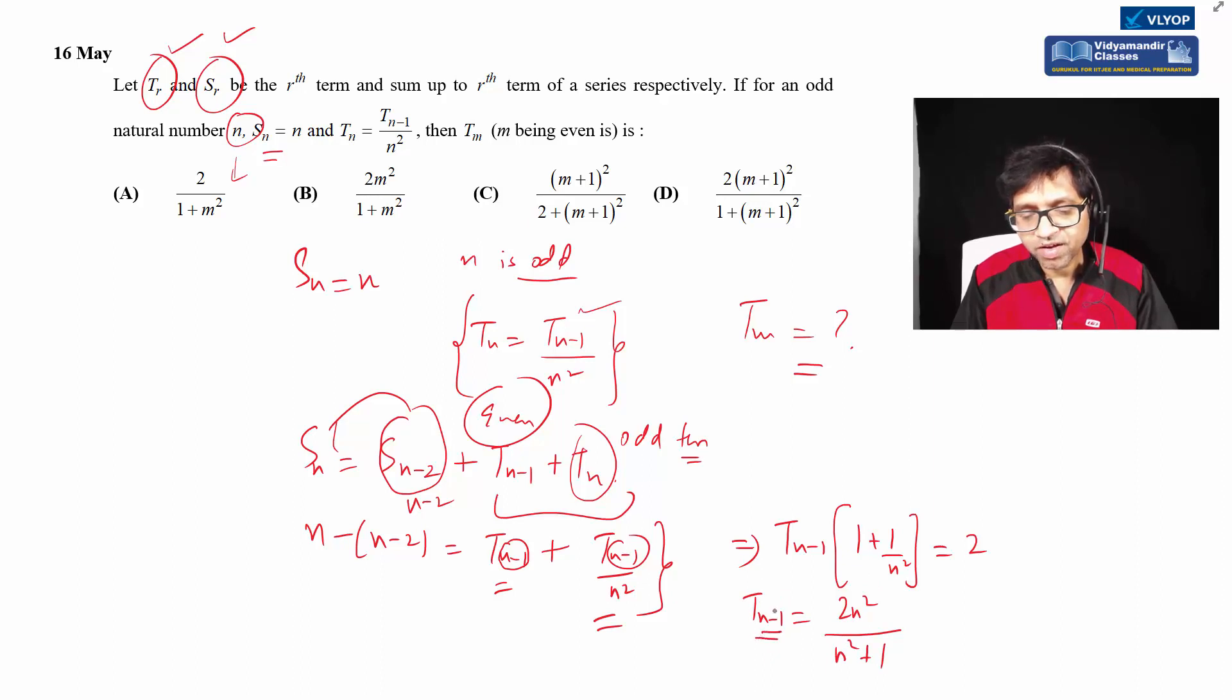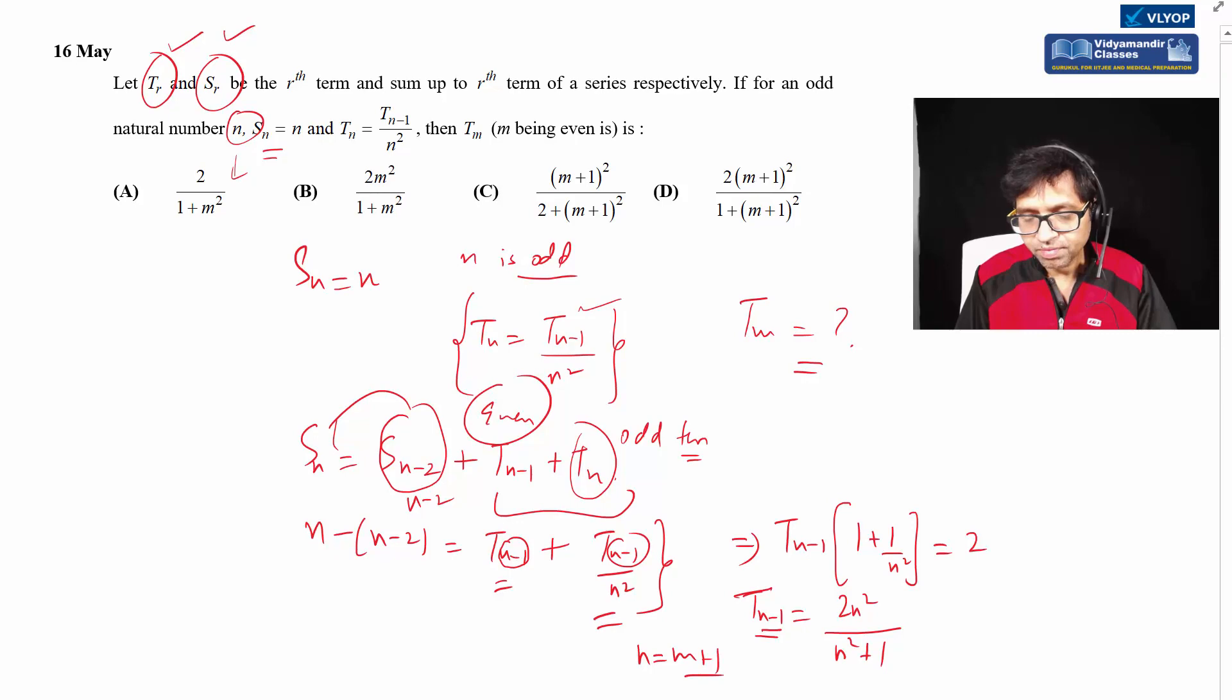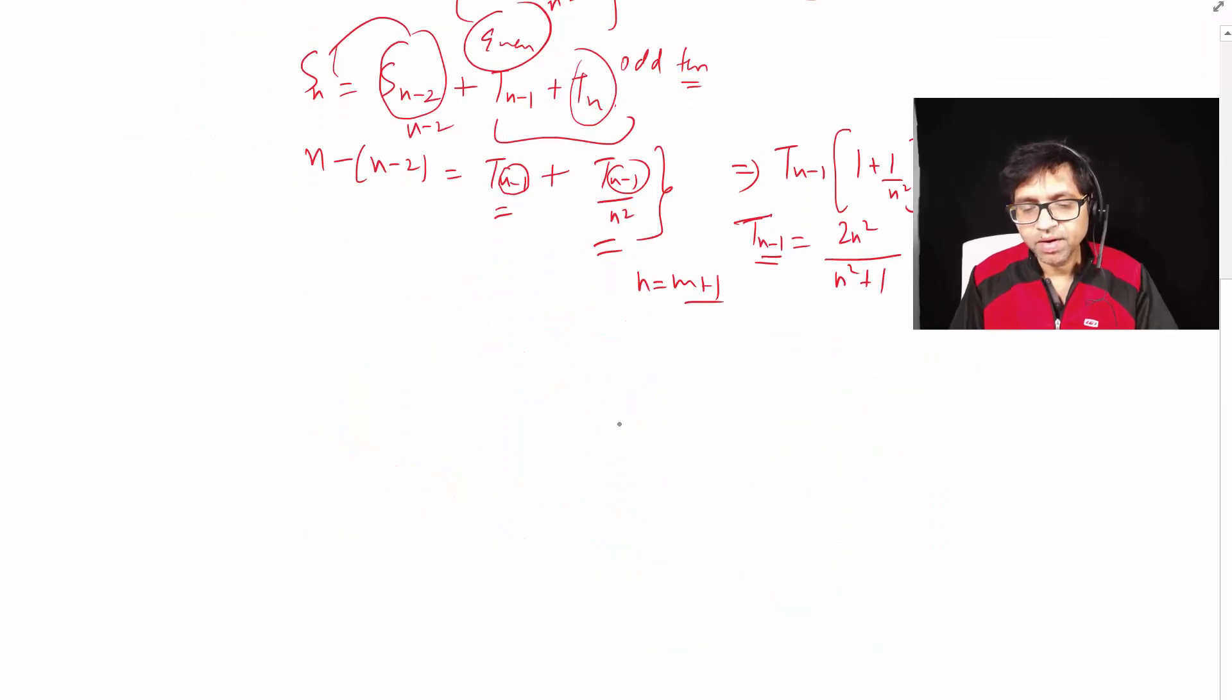Now I have the even term, but I need n minus one. So in the last step I'll replace n with m plus one. Since tm is asked, tm equals 2m times m plus one - I've replaced n with m plus one - divided by m plus one whole squared plus 1. This is my answer.